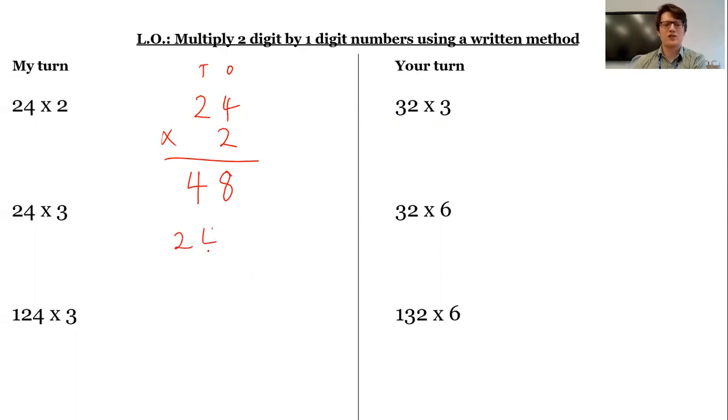What happens then if I change? Instead of timesing by 2, I'm going to times by 3 now. Now the problem here is I go over 10 because 3 times 4 is 12, which is more than 10. So I can't put 12 in the ones column, can I?